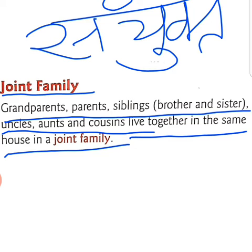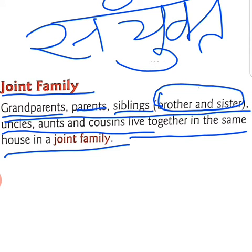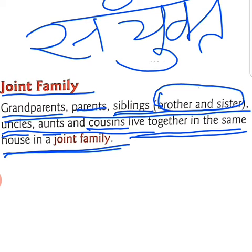Single family mein parents aur unke children rahate hain, lekin joint family mein grandparents, parents, siblings — siblings matlab bhai-bahan, ek hi mammi papa ke bachchon ko siblings kaha jata hai — uncles, aunts yani bhuwa, chachi, aur cousins yani chachera, mamera, phuphera bhai-bahan — sab ek saath rahate hain. Joint family ek badi family hoti hai. Gaon mein in rural areas, you will find more joint families than nuclear families, but in urban areas — shahari kshetron mein — joint family will be less in number and nuclear family will be more.